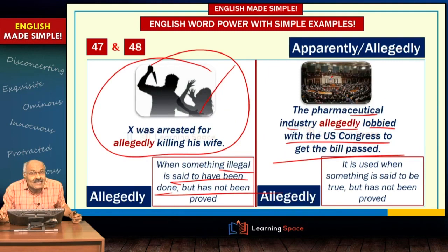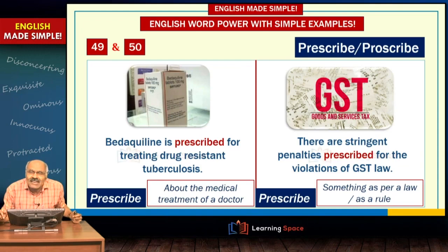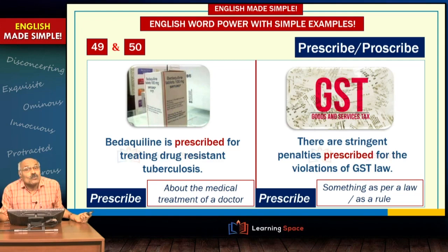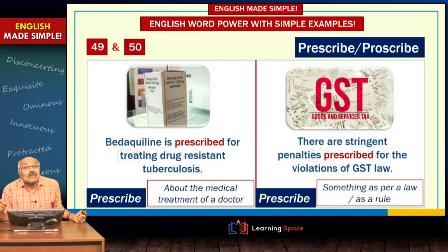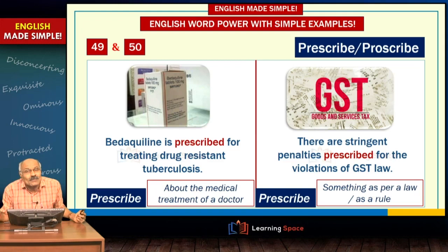'Prescribe' is a simple but important word. Doctors prescribe medicines — for example, bedaquiline, whose patent is expiring shortly, is prescribed to treat drug-resistant tuberculosis. Another usage: stringent punishments are prescribed for violations of GST law — meaning something is laid down as a rule or by law. For instance, 20% income tax is prescribed as per the Indian taxation system.